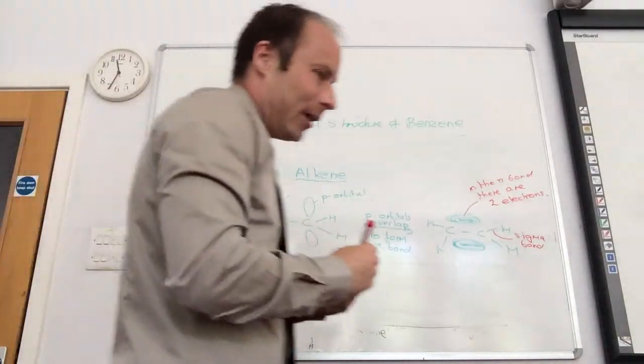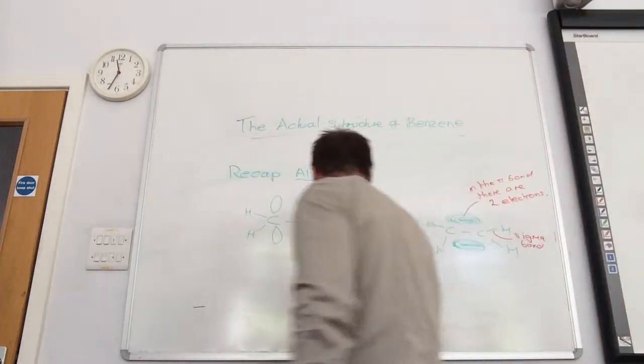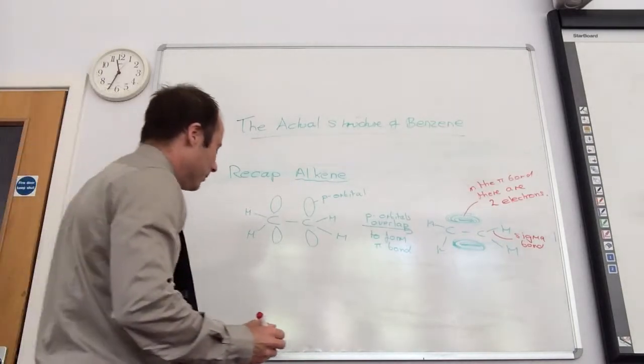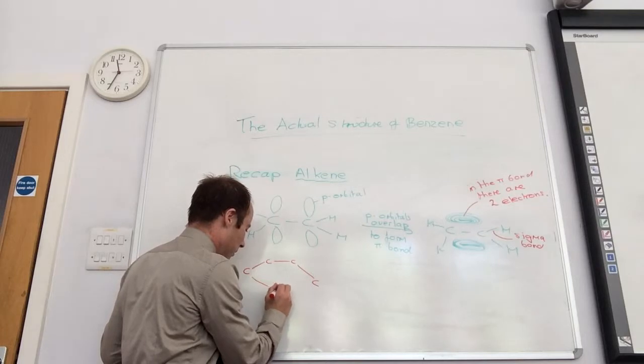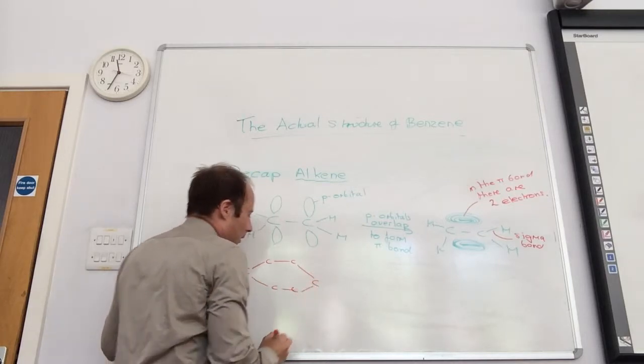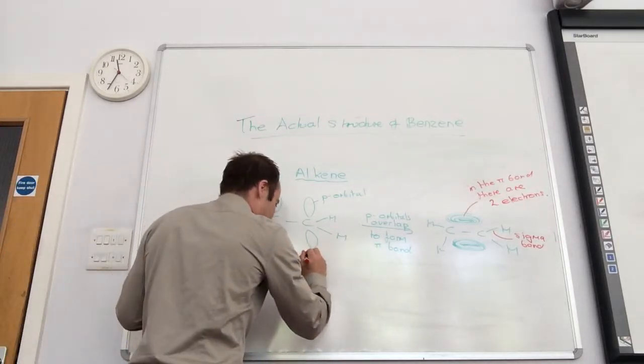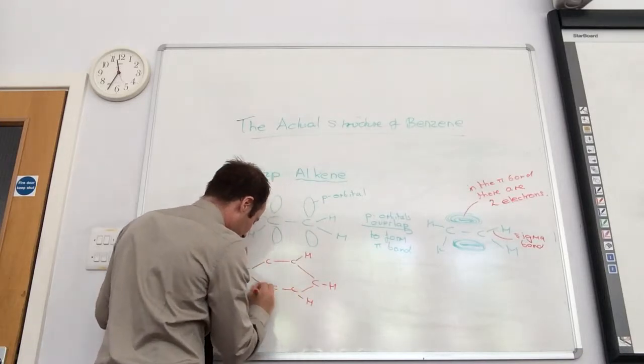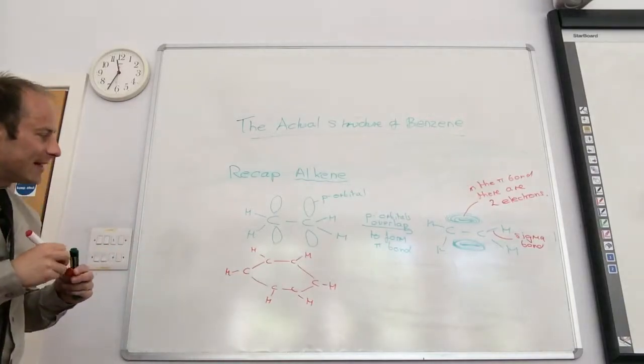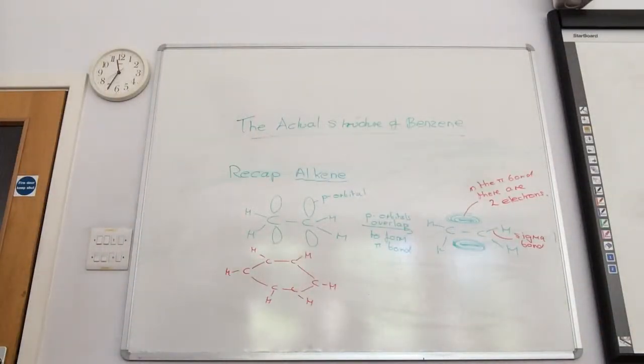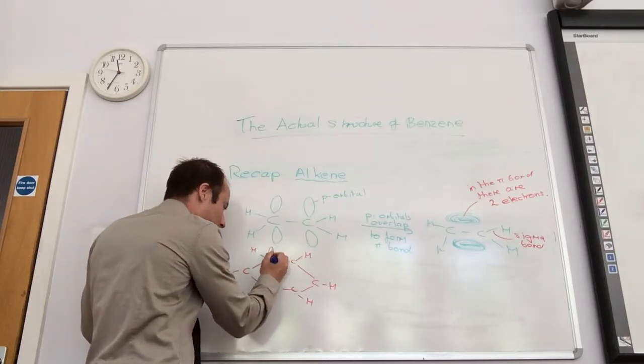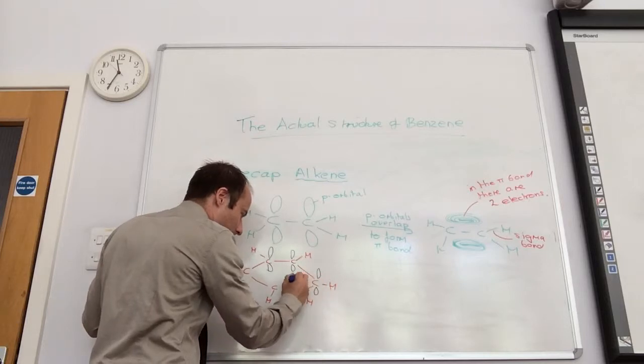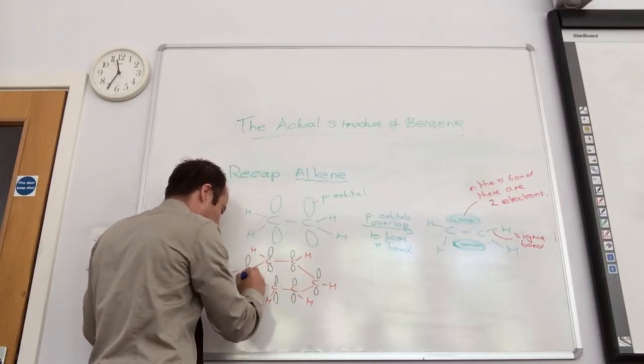This is where my artistic skills are severely limited, but we'll give it a go. I'm going to try and draw edge on, which will be a disaster. So I'm drawing my sigma framework here. So that's my C6H6 sigma framework ring, like so. So onto that I'm going to stick my p orbitals. So each carbon gets a p orbital.